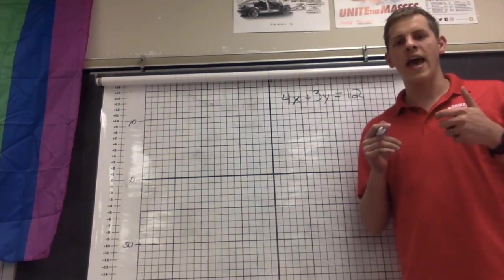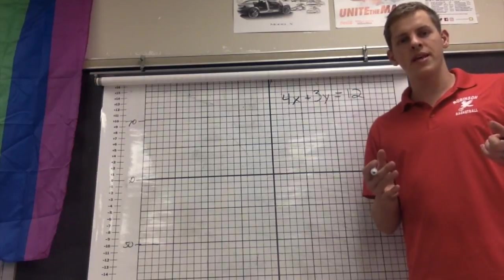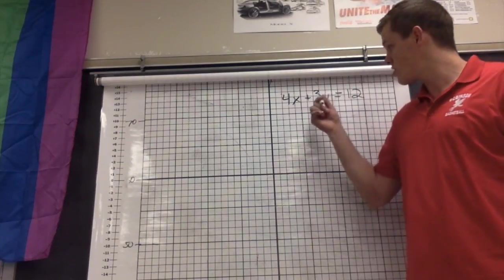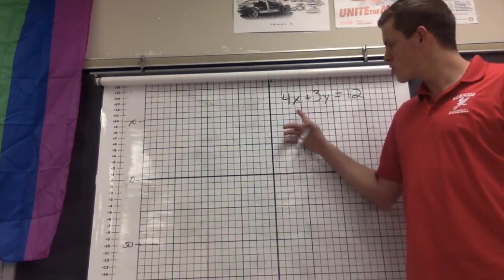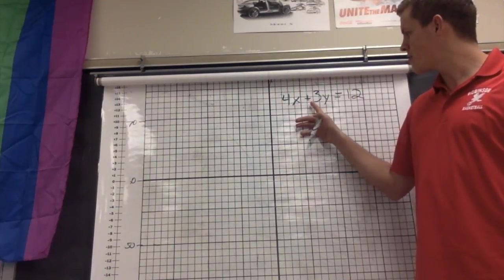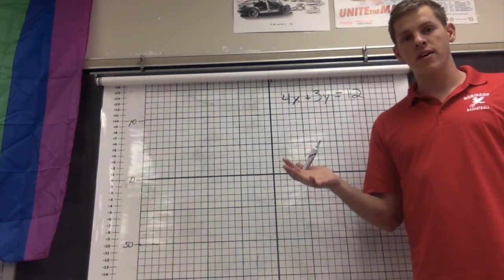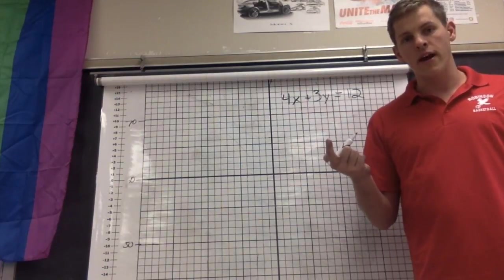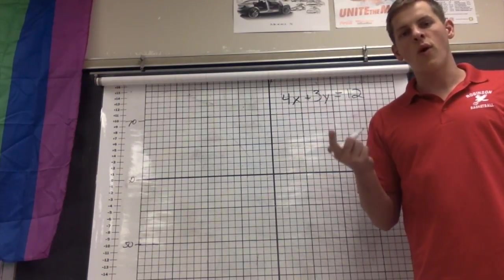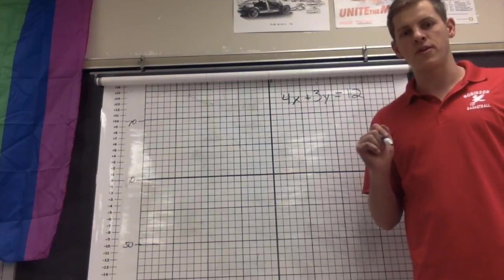Hello, today we're going to be looking at how to manipulate linear equations that start in standard form. So this right here, we get 4x plus 3y equals 12. I want to know what that graph looks like, and I want to know what the slope of the graph is going to be. I want to know what my y and x intercepts are going to be.